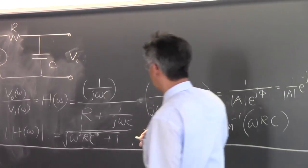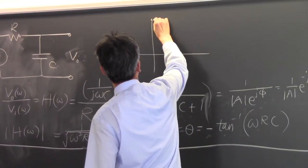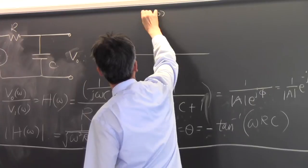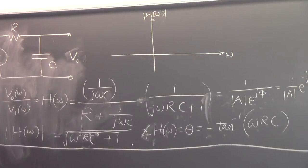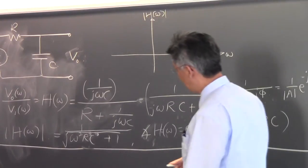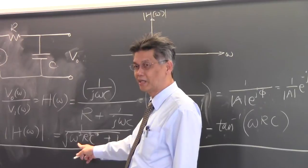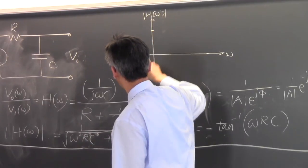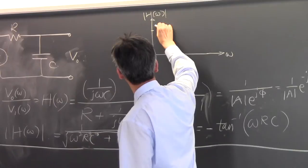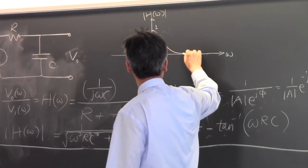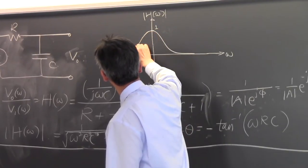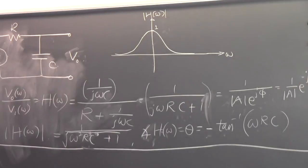If you were to plot this function H of omega, it has a maximum at ω equals zero — it equals one. But as you increase omega, this thing drops off. That is how the frequency response or the transfer function looks like.